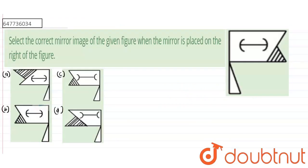Hi everyone, so the given question is: Select the correct mirror image of the given figure when the mirror is placed on the right of the figure.